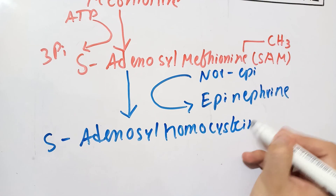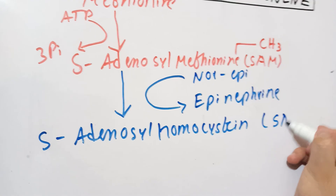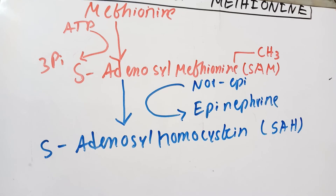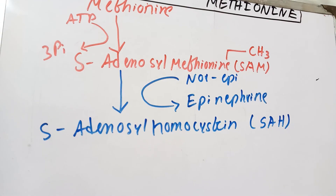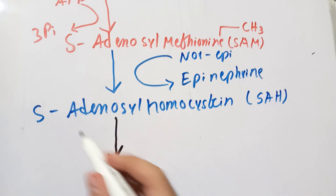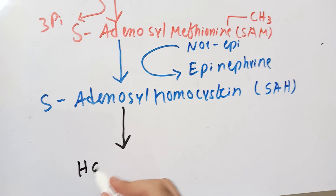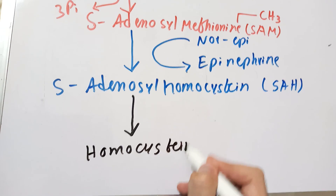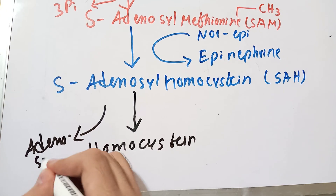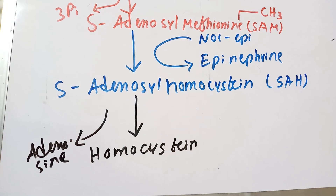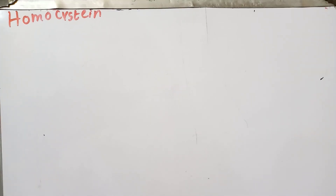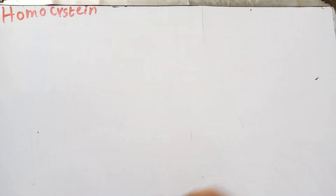The remaining compound after methyl donation is called S-adenosyl homocysteine. This S-adenosyl homocysteine will then break down into two compounds: the adenosine group will be removed, and the remaining compound will be called homocysteine.